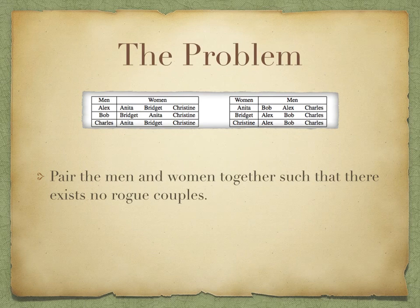A possible pairing in this list would be Alex and Anita, Bob and Bridget, and Charles and Christine. However, there is a catch because you want everyone on this list to be happy with the resulting partner. The problem is: can you pair everyone up so nobody can realistically cancel their relationship and find a better partner?